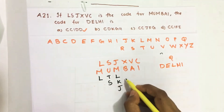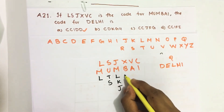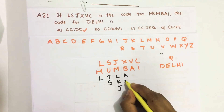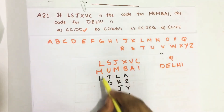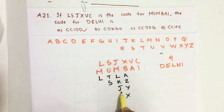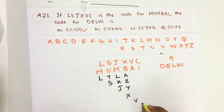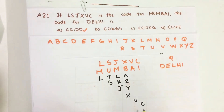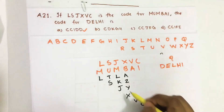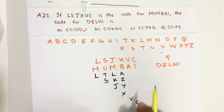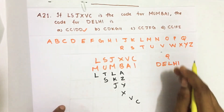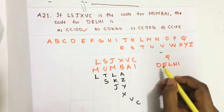Similarly, going back from B: next after B going backwards is A, Z, Y, X. So we get the code letters L, S, J, X. And we also get V and C for the remaining letters. So our full code is L, S, J, X, V, C — confirming the pattern. We now understand the relationship between Mumbai and its code, and will apply the same relationship to find the code for Delhi.